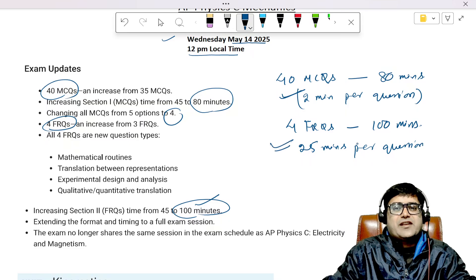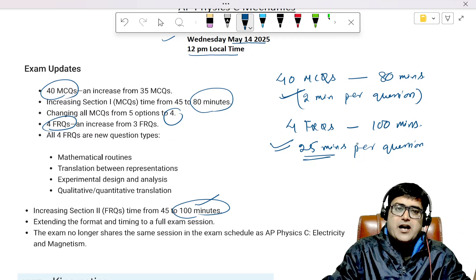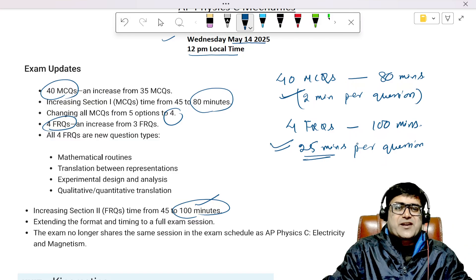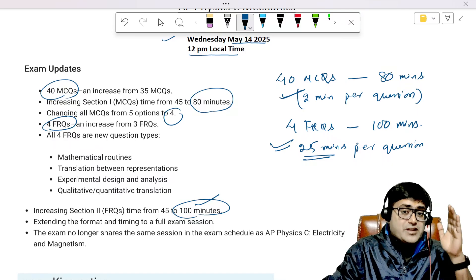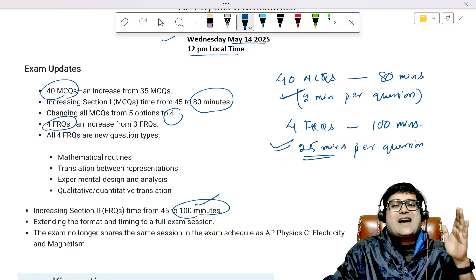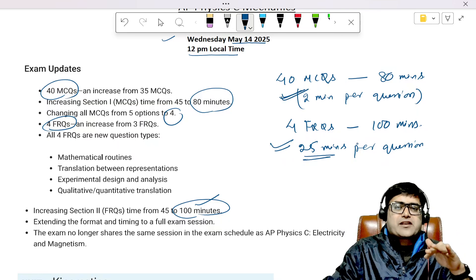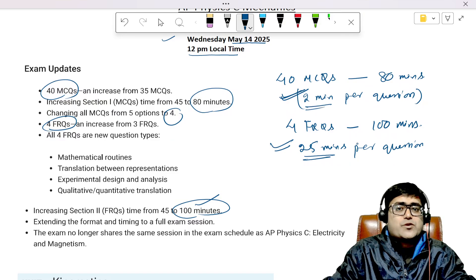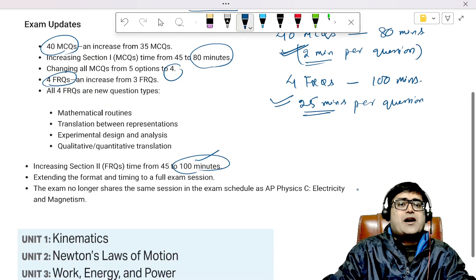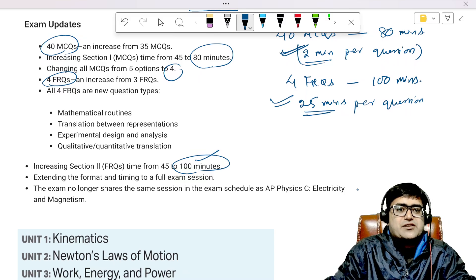This is where you can actually relax a little bit. You have 25 minutes per question, but the questions will be hard. So don't take it for granted that you have 25 minutes altogether. There also you have to be strategic. But I'm telling you, you will still have more relaxation and a little bit more comfort in FRQs than in MCQs because MCQs will put you in a very tight spot.